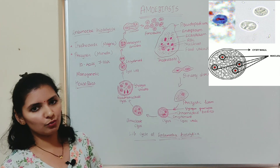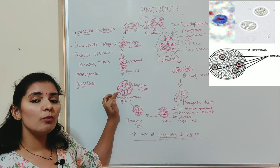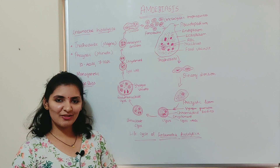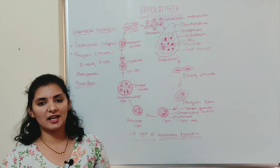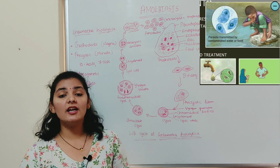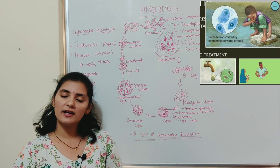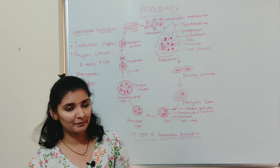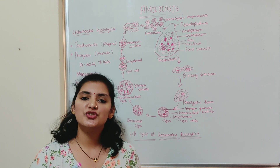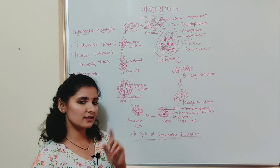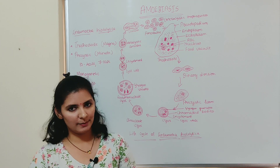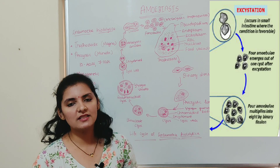This tetranucleate cyst is infective to a new host. The encysted form moves out of the host body along with fecal matter, and the infective cyst can remain alive for a long time outside the human intestine under favorable conditions. Infection of a new host occurs when a person swallows this infective cyst through contaminated water or food. Houseflies and cockroaches can also act as mechanical carriers, transmitting the infective cyst from fecal matter to food products.